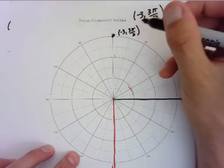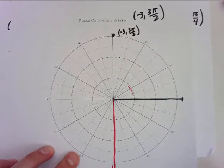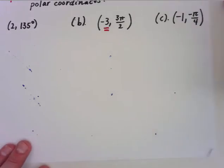So, be very careful on how we plot those. When you have that negative radius, it's got to be opposite of your terminal side. And I've drawn these terminal sides in red.